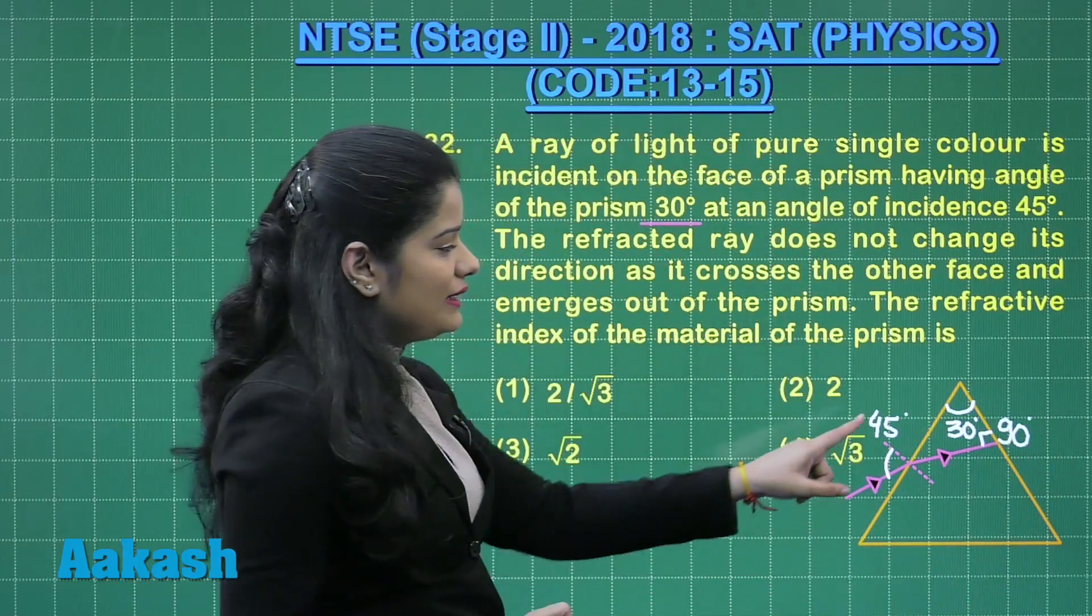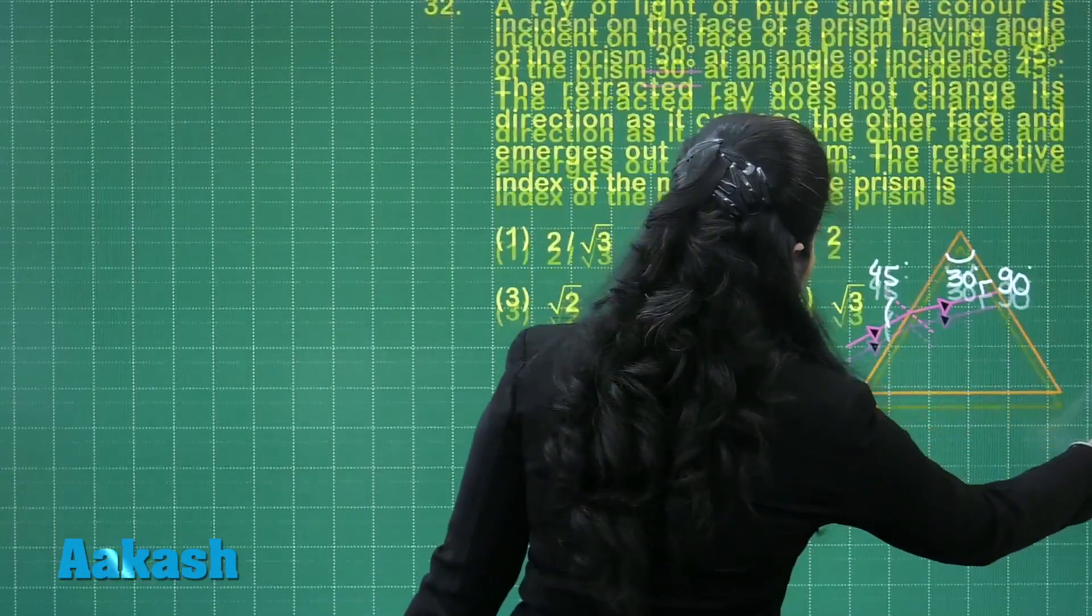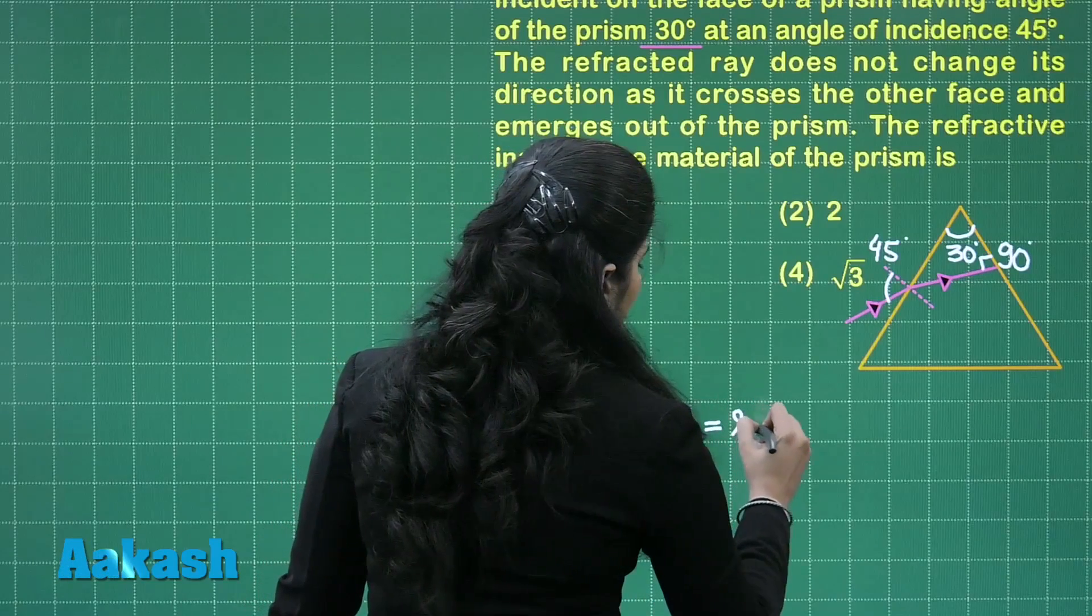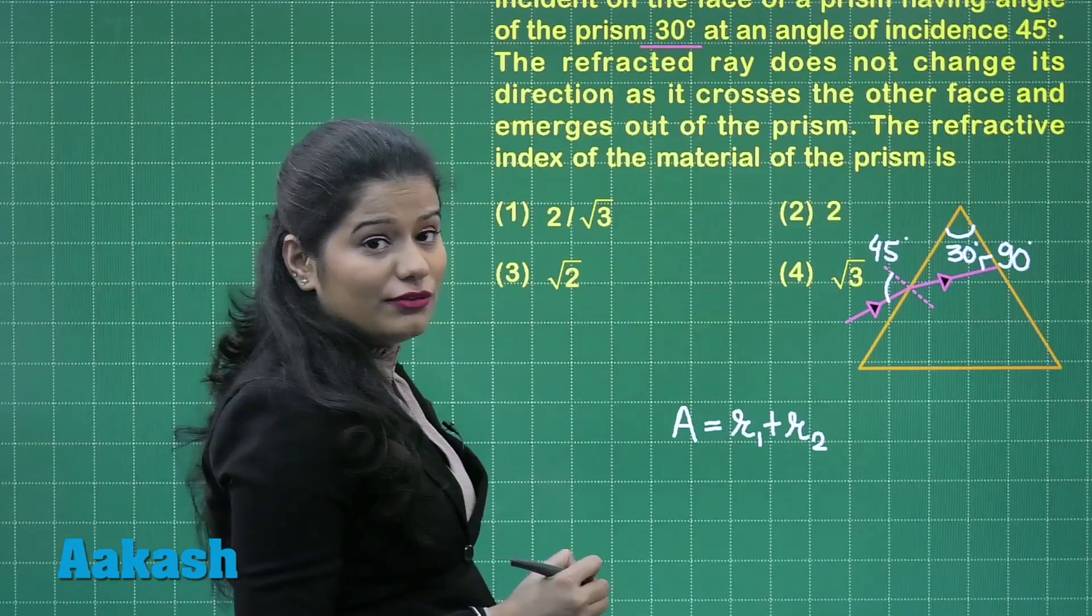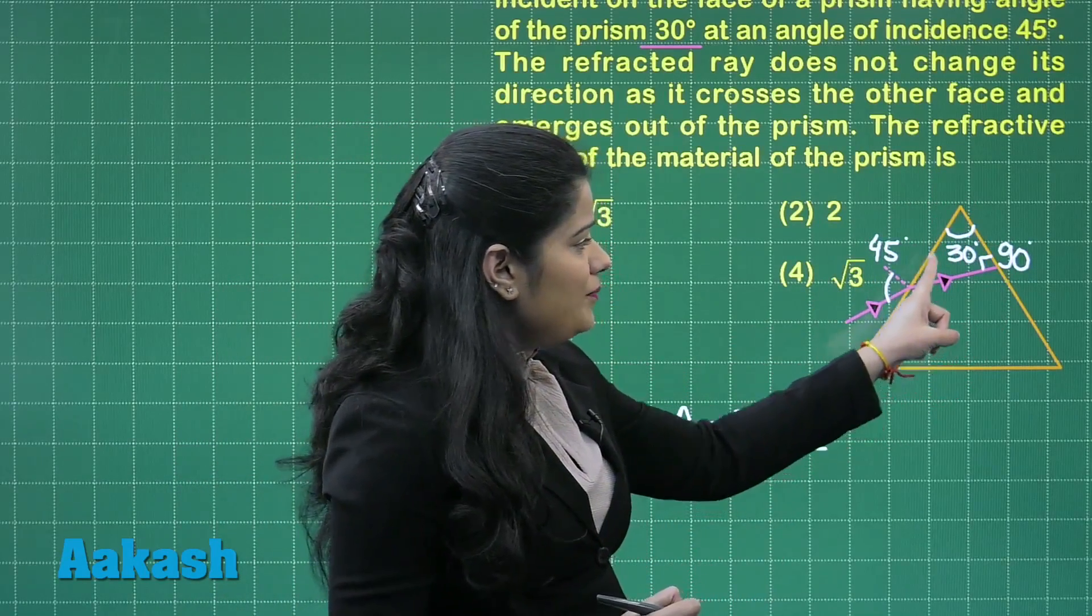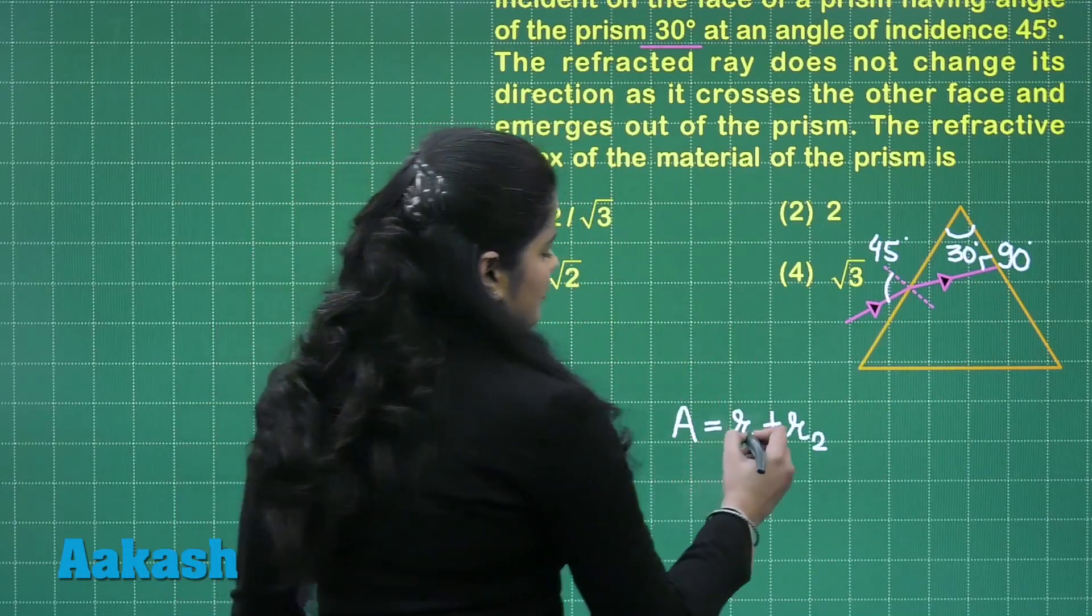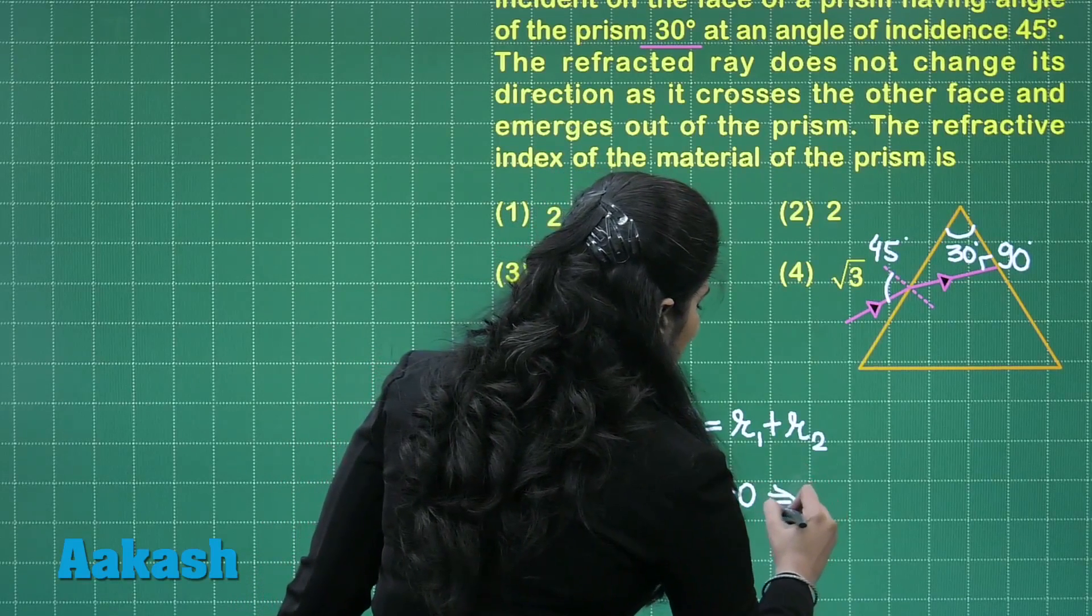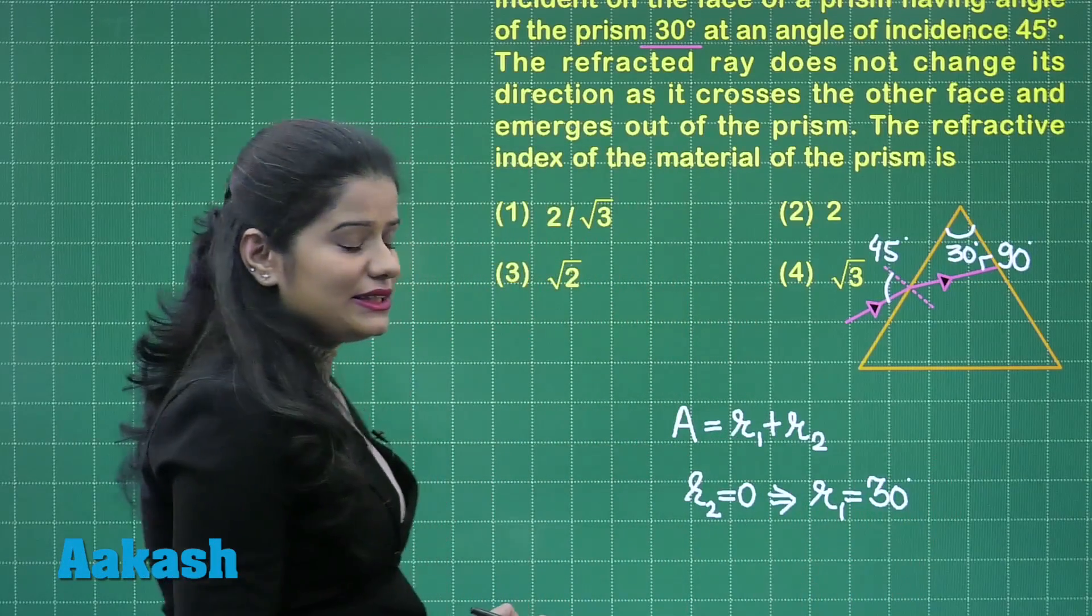We know the angle of prism is actually given by the formula A equals R1 plus R2, where R1 and R2 are the angles of refraction at these two surfaces. Clearly here the light ray is incident normal on this face, it means R2 is 0. This implies that R1 is actually equal to the angle of prism, that is 30 degrees.